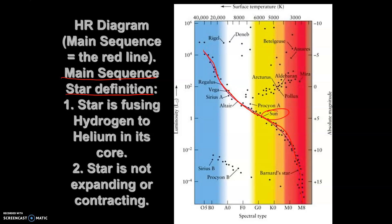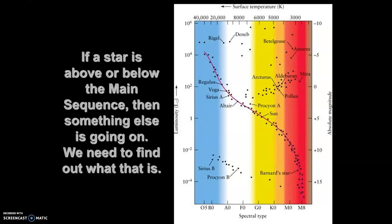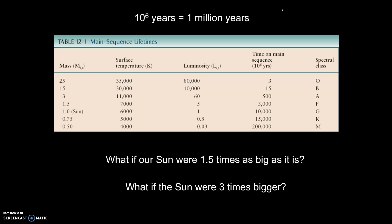It's important to reference the main sequence line because things that fall above or below it indicate something else is going on with that star. Our graph is based on luminosity or absolute magnitude, and also spectral type — those are different things we're going to define. We can also see temperature shown on this graph.